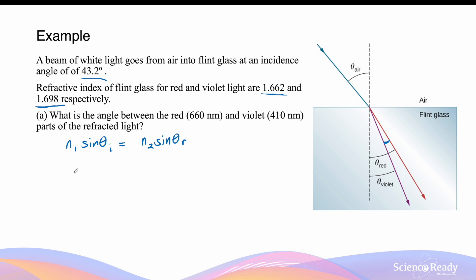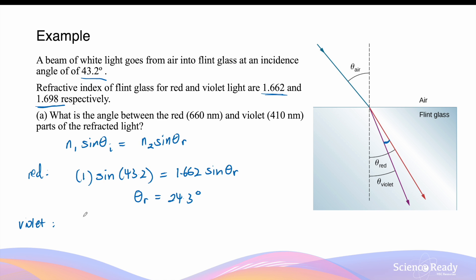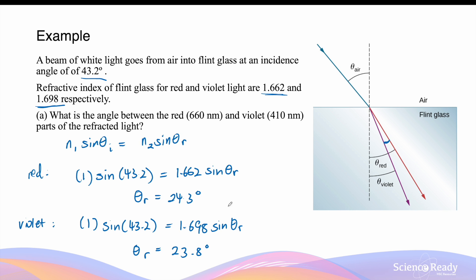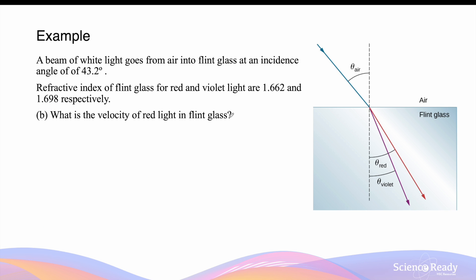Snell's law gives us: n₁ × sin(θᵢ) = n₂ × sin(θᵣ). For red light, n₁ = 1 (air) and n₂ = 1.662, giving an angle of refraction of about 24.3 degrees. For violet light, n₁ = 1 and the angle of incidence is the same since they were traveling together as white light; n₂ = 1.698, giving an angle of refraction of 23.8 degrees. The difference between the two angles is 24.3 − 23.8 = 0.5 degrees.